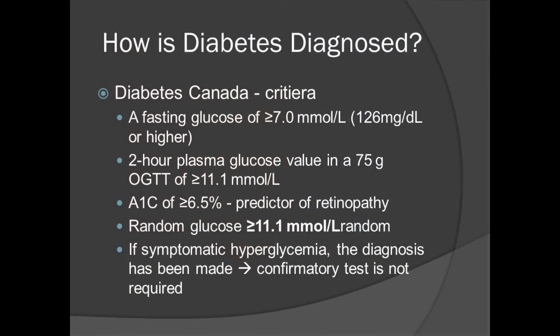Let's talk about how diabetes is diagnosed. Diabetes Canada has outlined several criteria. The first is a fasting blood sugar of greater than or equal to 7.0 millimoles per liter, which on the American scale is 126 milligrams per deciliter. Another test is the oral glucose tolerance test, where you drink a fluid containing precisely 75 grams of glucose. If your blood sugar level two hours after drinking it is greater than or equal to 11.1 millimoles per liter, you are diagnosed with diabetes.